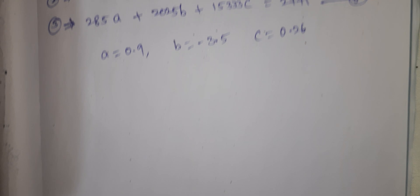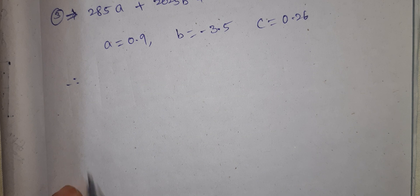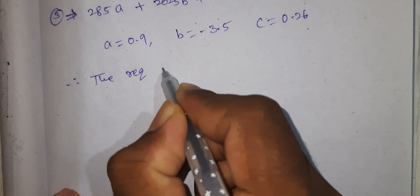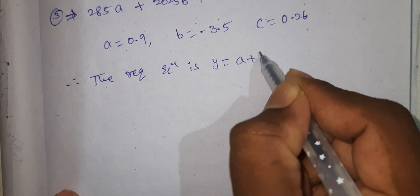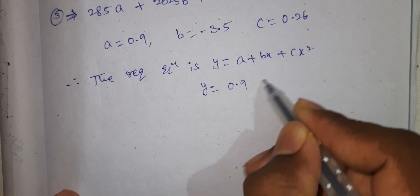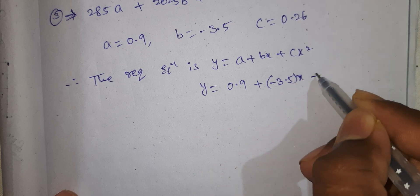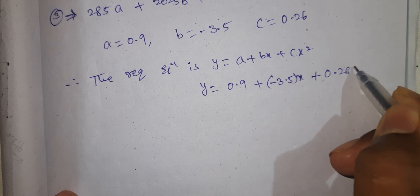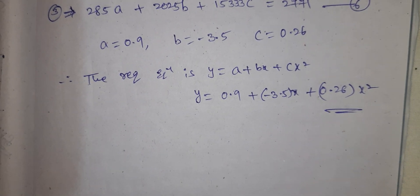Therefore, the required parabola equation of the form y equal to a plus bx plus cx squared gives us: y equal to 0.9 plus minus 3.5x plus 0.26x squared. This is the solution. This is very easy.